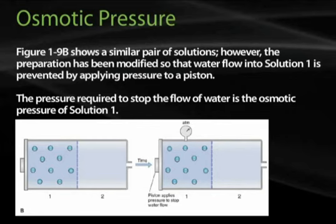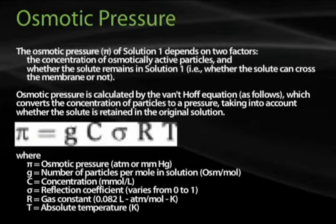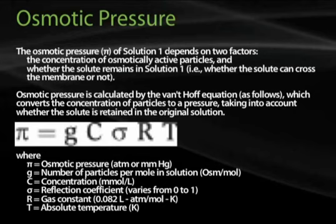Figure 1-9b, also from page 13, shows a similar pair of solutions. However, the preparation has been modified so that water flow into solution 1 is prevented by applying pressure to a piston. The pressure required to stop the flow of water is the osmotic pressure of solution 1. The osmotic pressure pi depends on two factors: the concentration of osmotically active particles and whether the solute remains in solution 1, i.e. whether the solute can cross the membrane. The osmotic pressure is calculated by the van't Hoff equation, which converts the concentration of particles to a pressure, taking into account whether the solute is retained in the original solution.